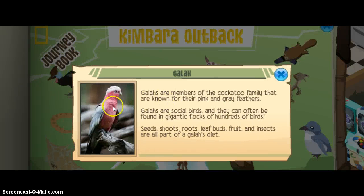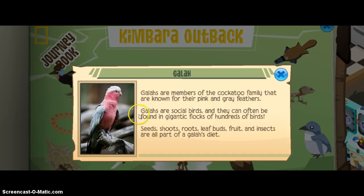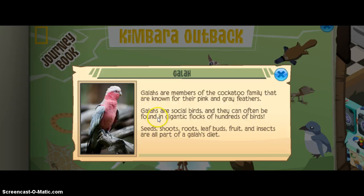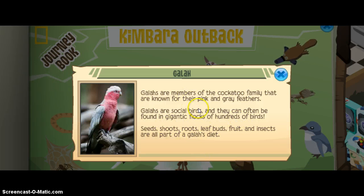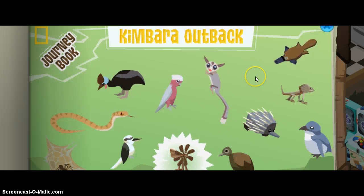Galahs are members of the cockatoo family that are known for their pink and gray feathers. Galahs are social birds and can often be found in gigantic flocks of hundreds of birds. Seeds, shoots, roots, leaf buds, fruit, and insects are all a part of the galah diet.